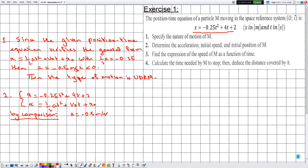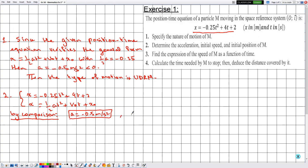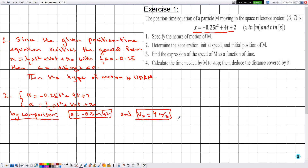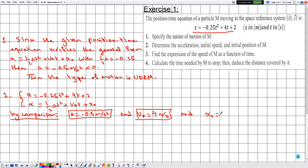Comparing the linear terms: 4t corresponds to v₀t, so v₀ = 4 m/s. Comparing the constants: the constant term 2 corresponds to x₀, so x₀ = 2 m. In summary: a = -0.5 m/s², the initial speed v₀ = 4 m/s, and the initial position x₀ = 2 m.